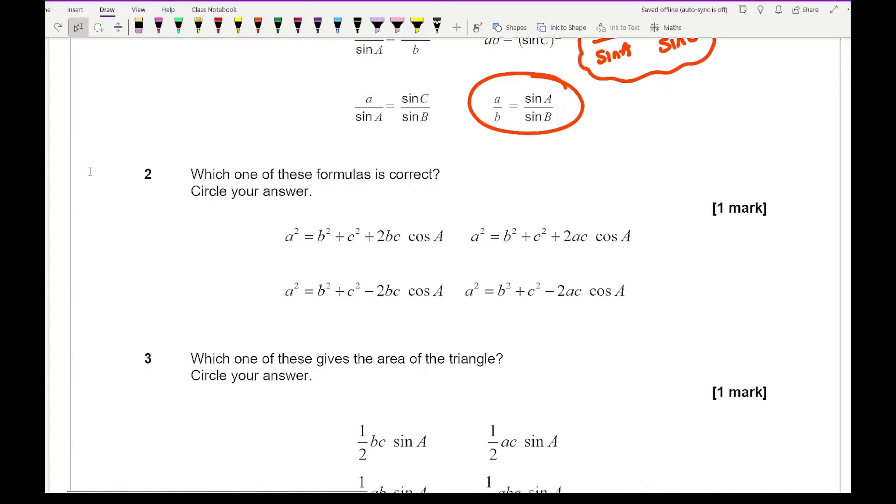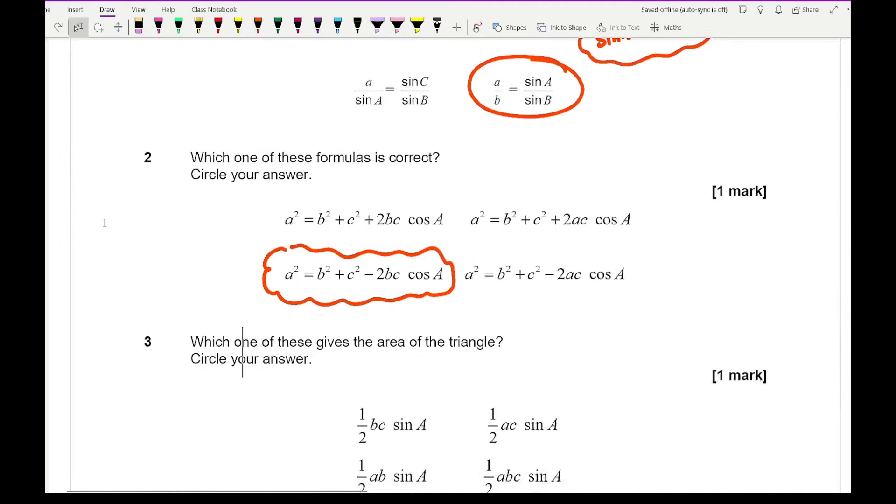Now for the next one question 2 it says which of the following formulas is correct again? Now this one the correct answer you should have is our bottom left. And again that's perfectly written in the same orientation as what's written in terms of how we were taught of the cosine rule when you're finding a side.